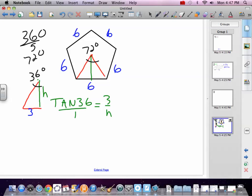Cross multiply would be easy for some, so we got h tan 36 equals 3. Divide both sides by tangent 36. h equals 3 over tan 36... 4.13.